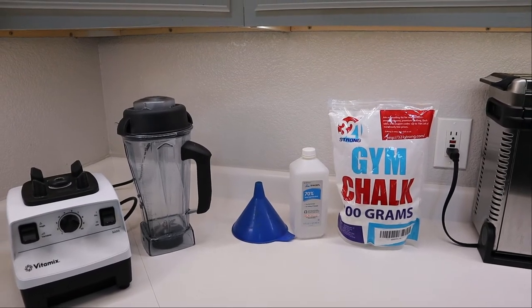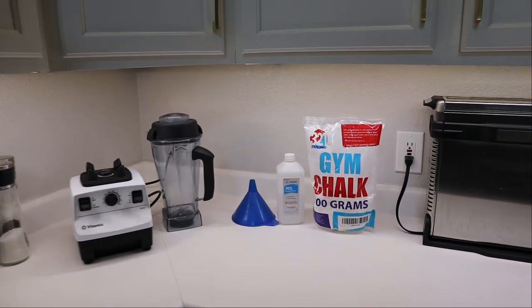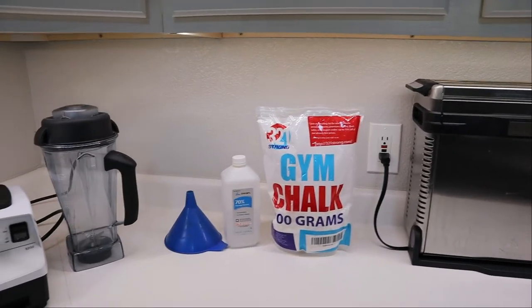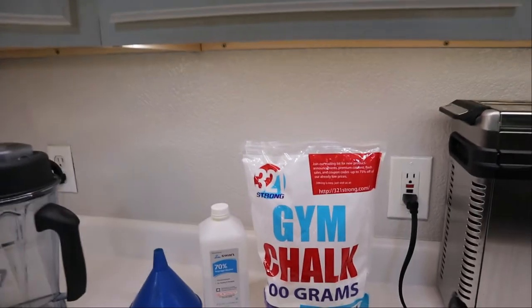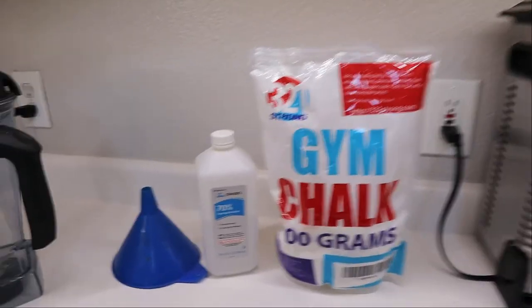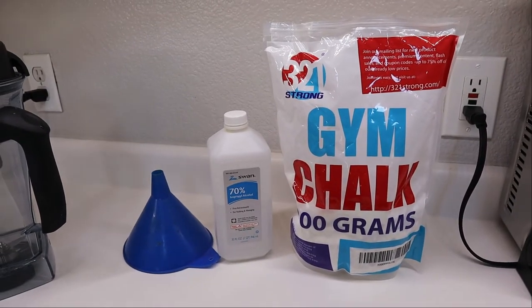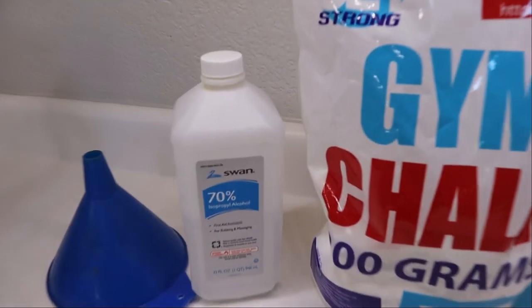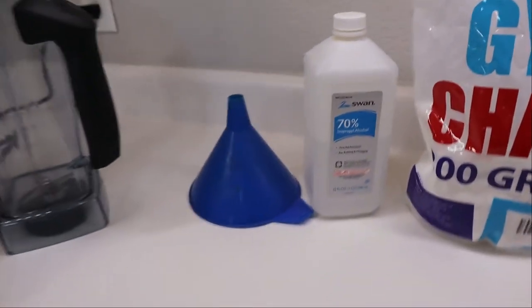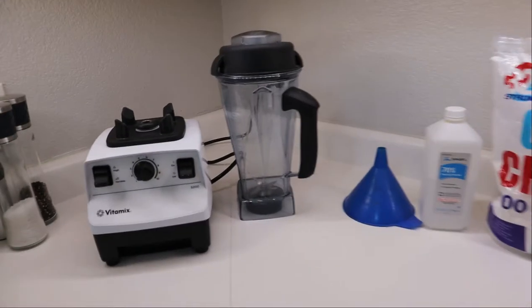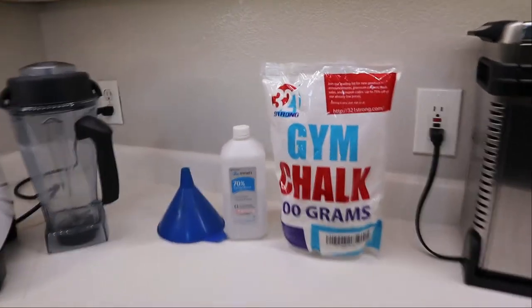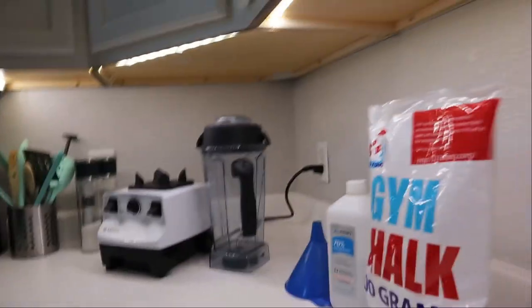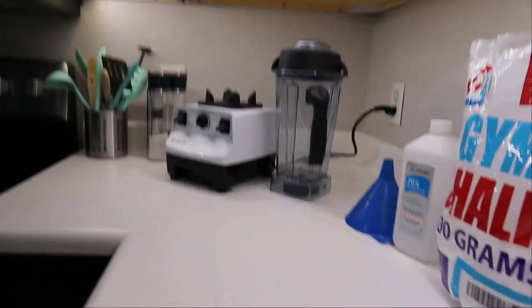Alright guys, today I'm going to show you how to make your own liquid chalk. What you'll need is loose gym chalk, some rubbing alcohol (this is 70%), a funnel, and a blender. I'm going to set this up and show you exactly how to make it.